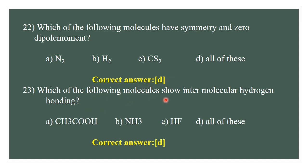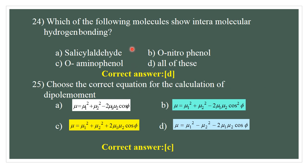Question number 23. Which of the following molecules shows intermolecular hydrogen bonding? The answer is salicylaldehyde. The correct answer is D.